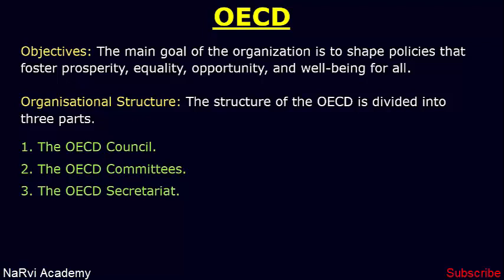The heads of government of member countries also meet once a year to monitor and discuss the global economic and trade context. The OECD works through more than 300 committees, expert and working groups, which cover almost all areas of policymaking — including education, finance, trade, environment, and development — with country-level experts.